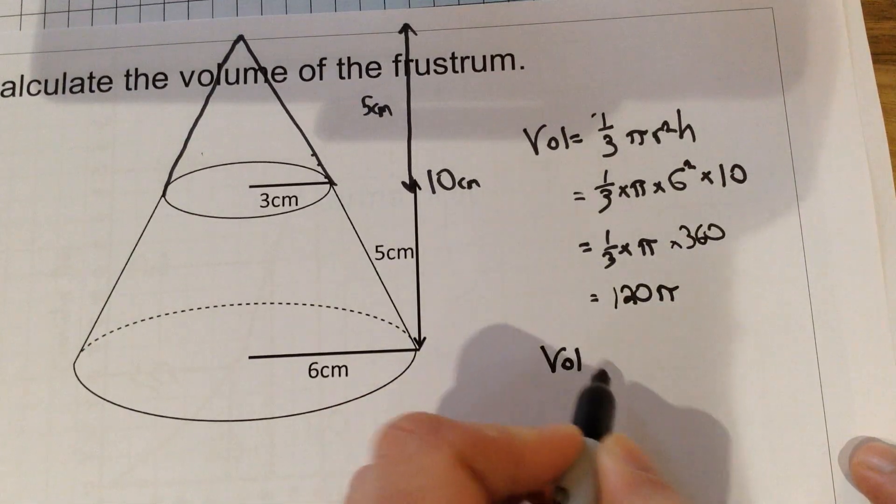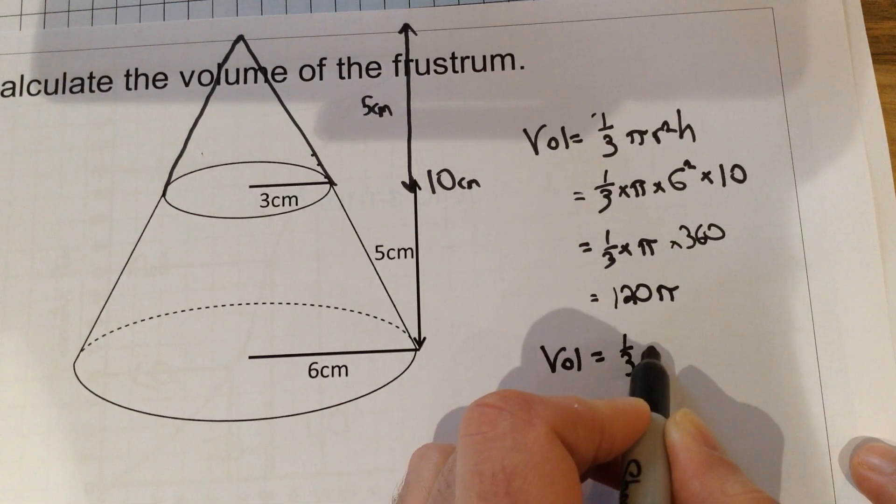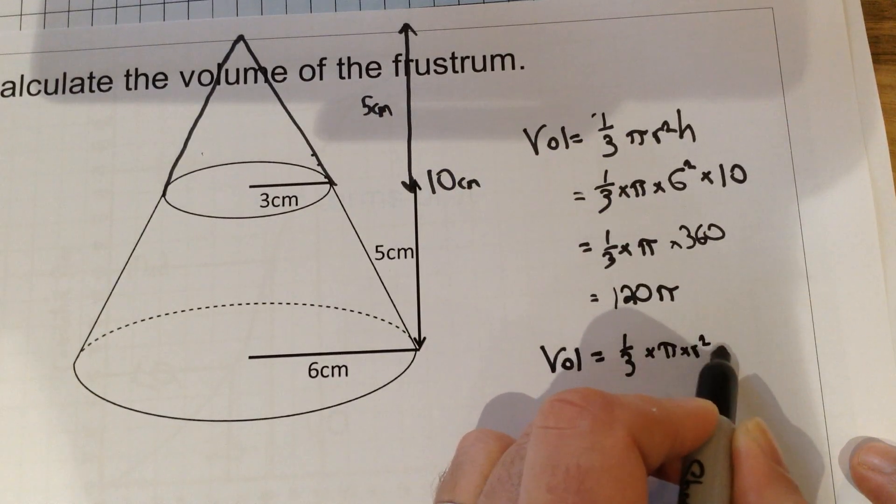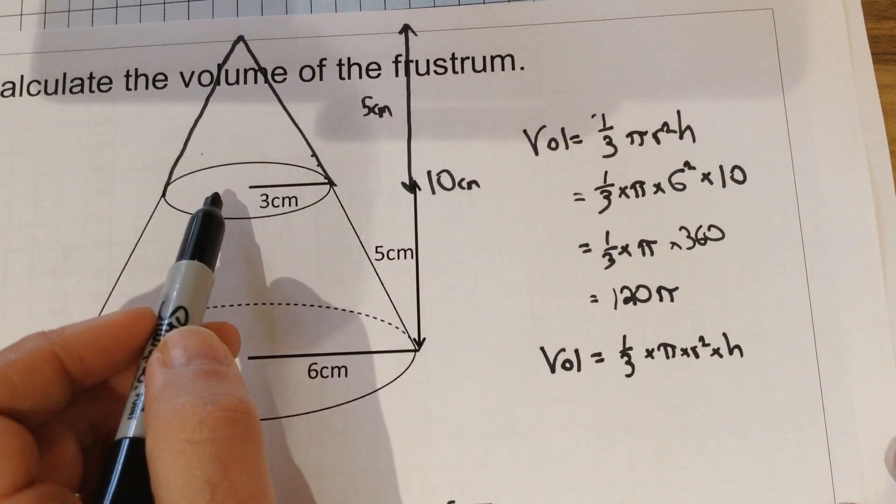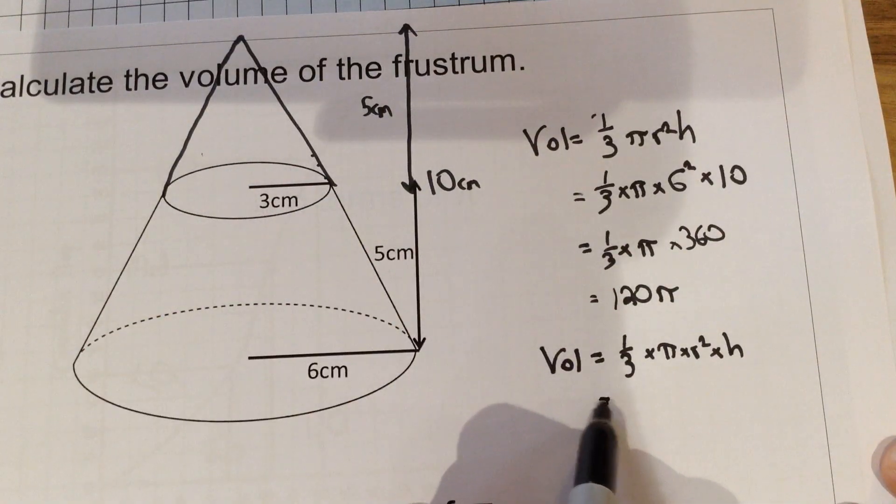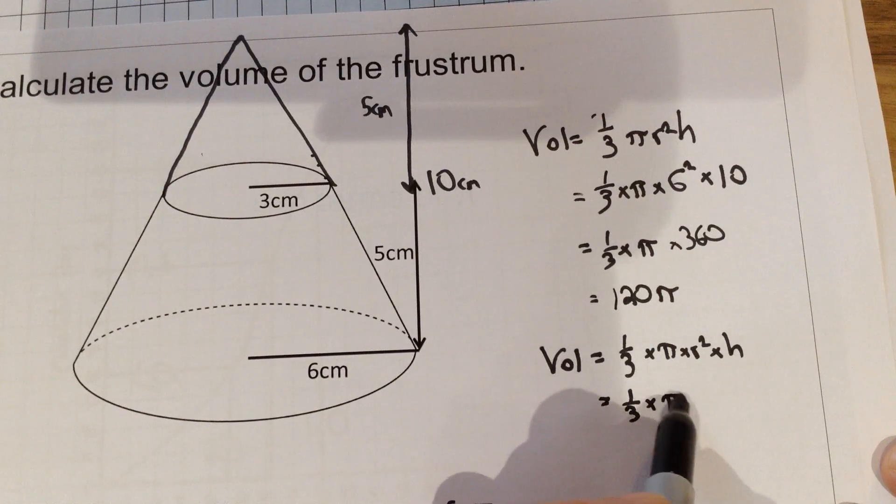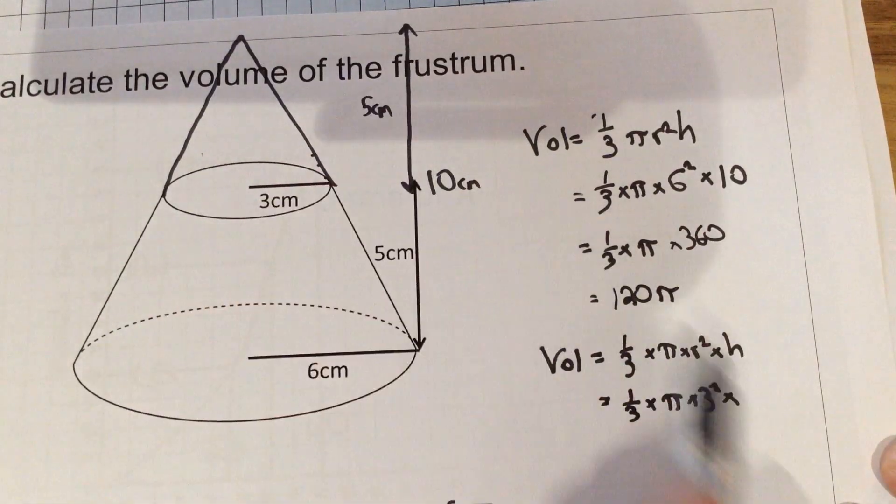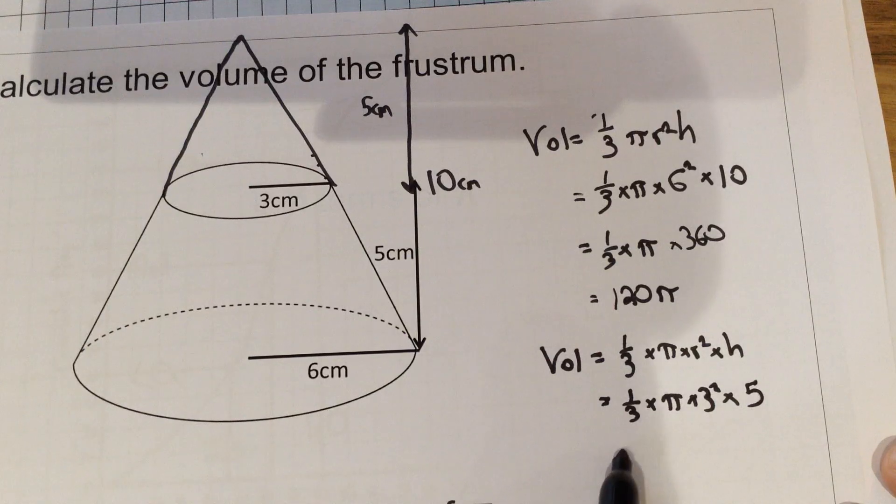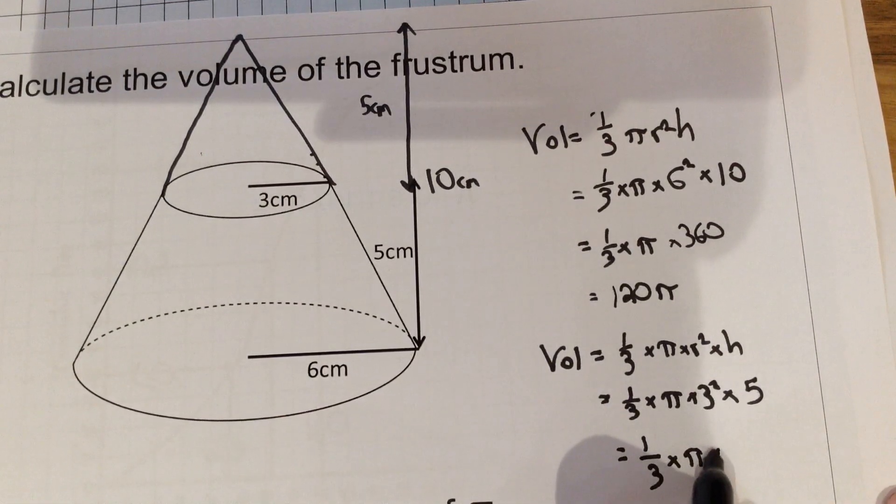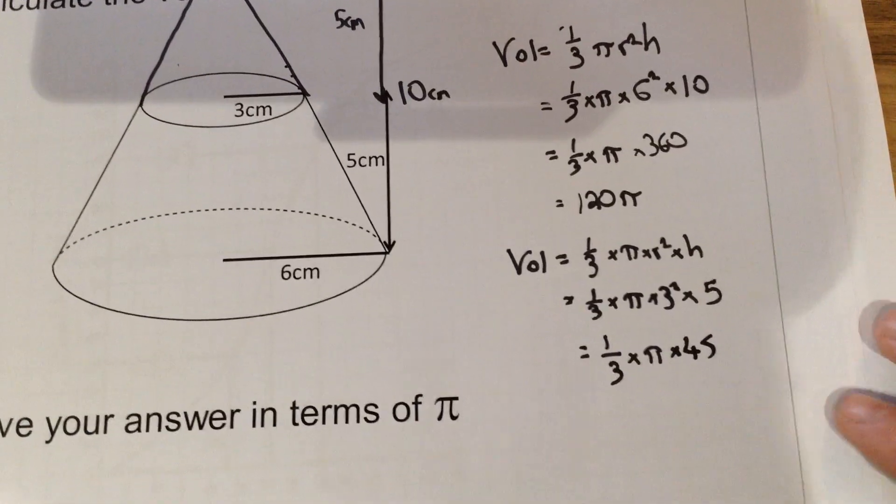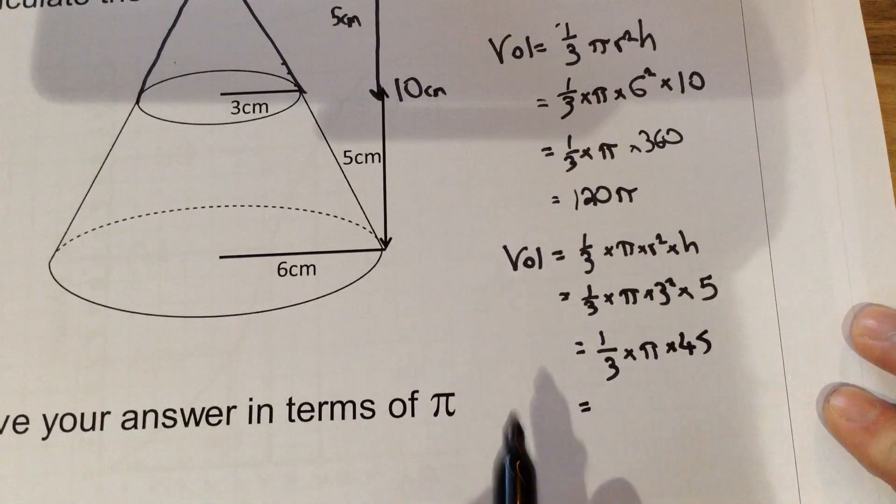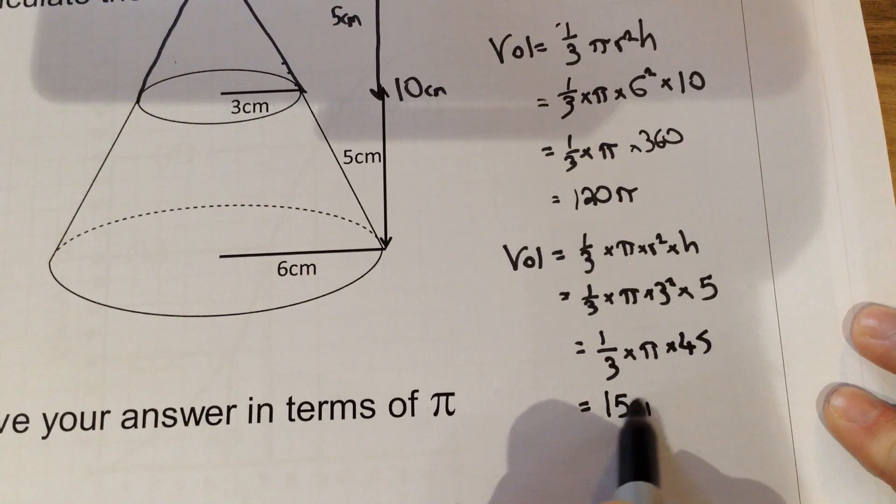The smaller cone, we're going to do the exact same thing. So one-third times pi times radius squared times height. So for the smaller cone, the radius here is 3, so we're going to get one-third times pi times 3 squared times 5. The height of just this smaller cone is 5. If we then start neatening this up, we get one-third times pi. Three squared is 9. Multiplying that by 5 would give us 45. And then one-third of 45 is just 15. And it's 15 lots of pi.